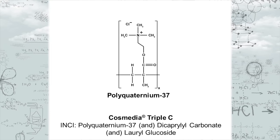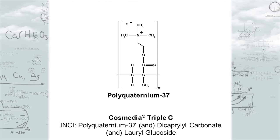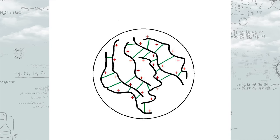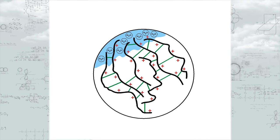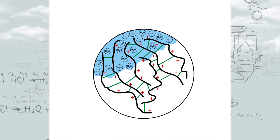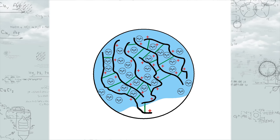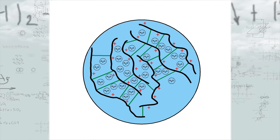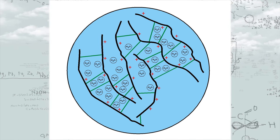Let's look at the formulation molecularly. Cosmedia Triple C contains hydrophilic polymer microparticles of the ingredient polyquaternium-37. In its dehydrated form, the swellable polymer microparticle is small, approximately 0.5 micrometers in diameter. When Cosmedia Triple C is added to water, the water molecules enter the crevices of the microparticle via osmotic flow. Water molecules also solvate the cationic charges along the polymer, further enhancing swelling through ionic repulsion, increasing the sizes of the crevices and allowing more water molecules to enter the microparticle. Both phenomena effectively swell the microparticle to almost 10 times its original size, thickening the aqueous solution.